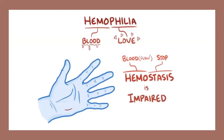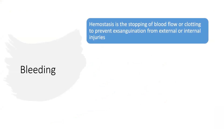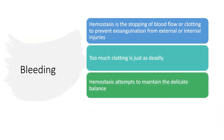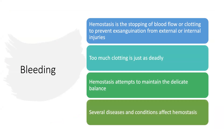Coagulation disorders include hemophilia — 'hemo' means blood and 'philia' means love. Hemostasis is impaired when blood flow stops. Bleeding, or hemostasis, refers to stopping blood flow or clotting to prevent exsanguination from external or internal injuries. Too much clotting is just as deadly.